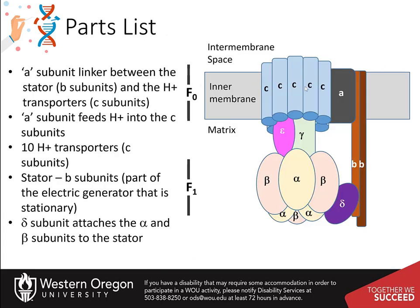The F-naught domain and the stator are given English letter designations for each of the subunits. The B subunit of the ATP synthase is known as the stator, or the portion of the protein motor that does not move. It also connects both the F-naught and the F-1 domains through linker subunits. The A subunit is an important subunit that links the stator with the C subunits, and is also critical for helping the C subunits adopt the correct conformation for harvesting protons from the inner mitochondrial space, and then changing shape to release them into the matrix.